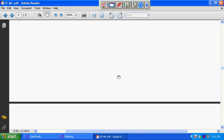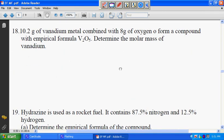10.2 grams of vanadium metal combined with 8 grams of oxygen to form a compound with empirical formula V2O5. Determine the molar mass of vanadium. So this is vanadium V2O5. We have 10.2 and 8. So we use a whiteboard.